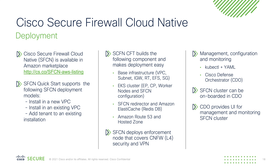When you use the Quick Start, you can deploy your SFCN architecture in a new VPC or an existing VPC. You can even add a tenant into your existing installation. The entire CloudFormation Quick Start is designed to provision your base infrastructure, build your EKS cluster, deploy optional components like SFCN redirector and ElastiCache, and configure your Route 53 hosted zones.